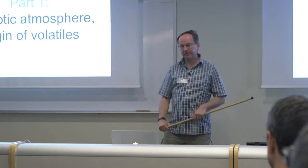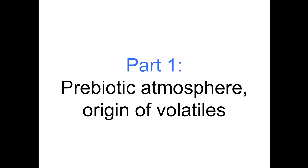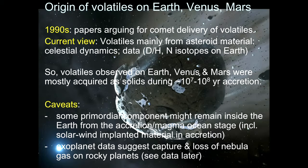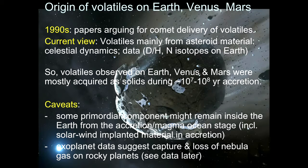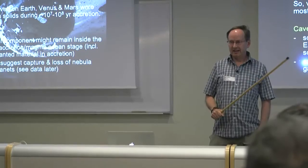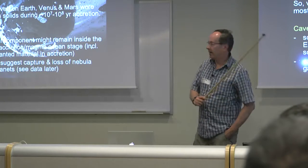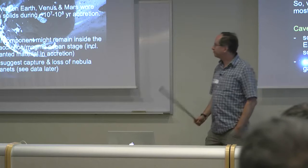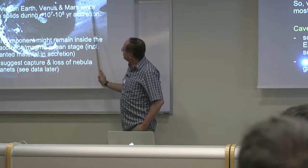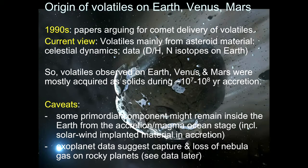Part one: prebiotic atmosphere, origin of volatiles. In the 1990s, several papers came out suggesting the importance of comets for delivering volatiles. But based on celestial dynamics models and data, the prevailing view now is that the volatiles — the carbon, the water, the nitrogen — came from asteroidal material with maybe 10% or less from comets. That said, comets and asteroids is just our way of naming things; in reality there's a gradation from icy asteroids to comets. These were acquired on the terrestrial planets during accretion in the late phase as solid materials.